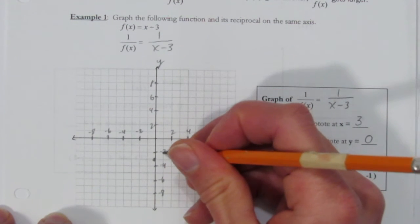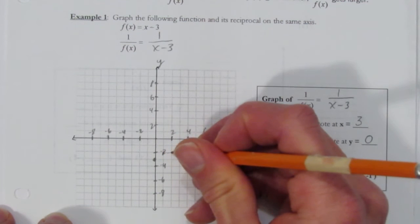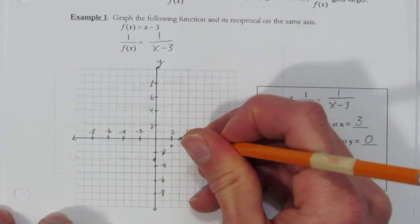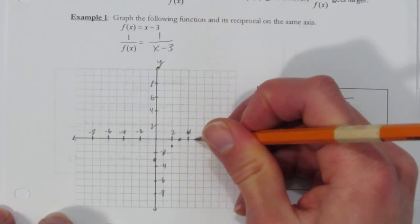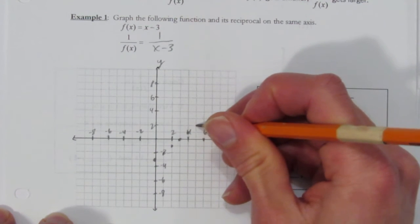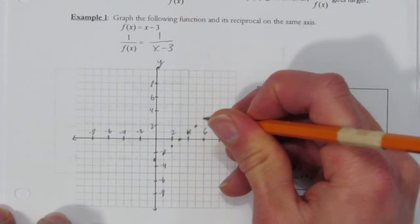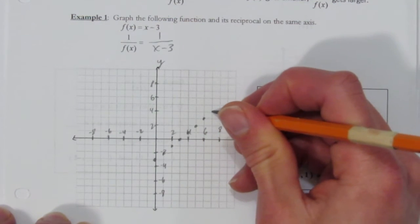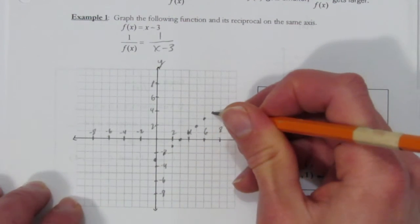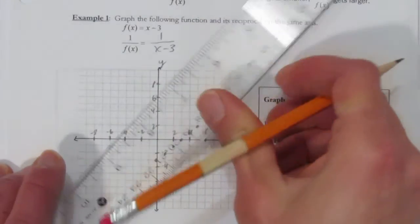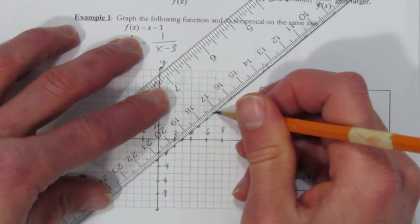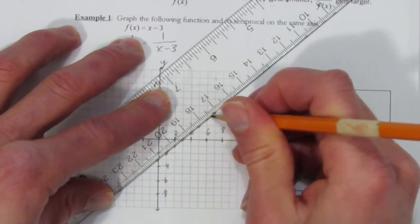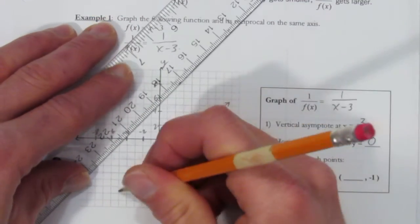So, rise and run of 1 over 1. Up 1, over 1, up 1. I can keep going - over 1, up 1, continuing to plot points along the line. There's my line. Let's connect it with a ruler because we want to be accurate here. This is the original equation, f(x).